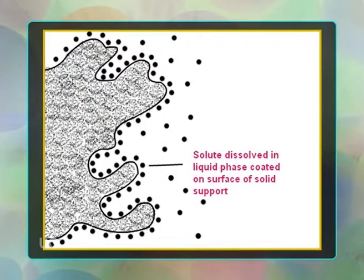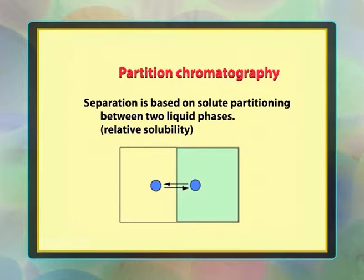Based on the principle of separation used: Adsorption chromatography — sample molecules are separated due to greater affinity to absorb onto the solid stationary phase compared to the mobile phase. This principle works when the stationary phase is a solid and the mobile phase is a liquid solvent. Partition chromatography — sample molecules are separated due to relative differences of dissolution and partitioning into different phases. Molecules with greater partition into the mobile phase are separated faster, while those with greater partition into the solid phase move slower.